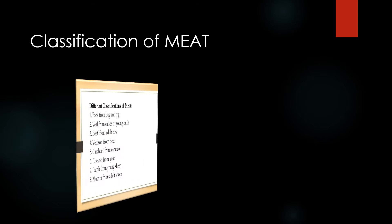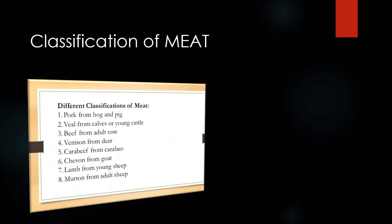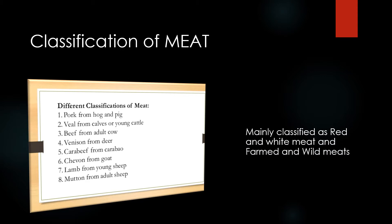Classification of meat. It is basically classified into two categories: white meat and red meat.